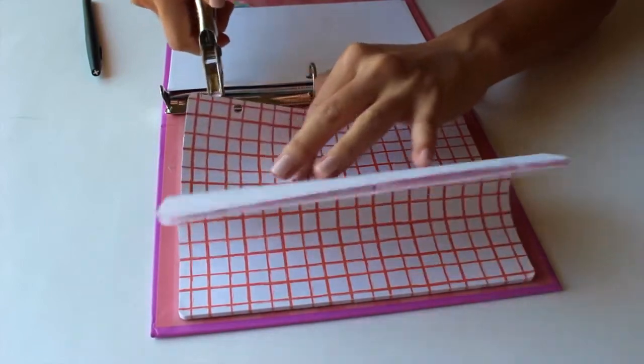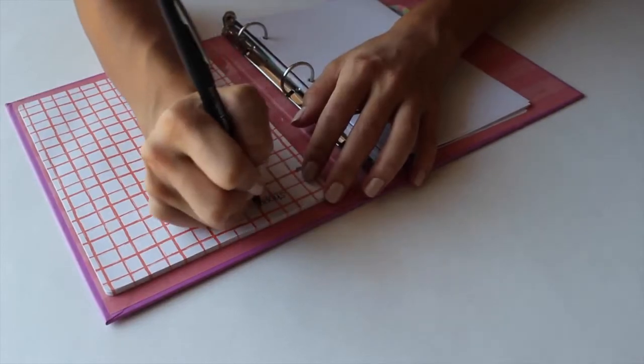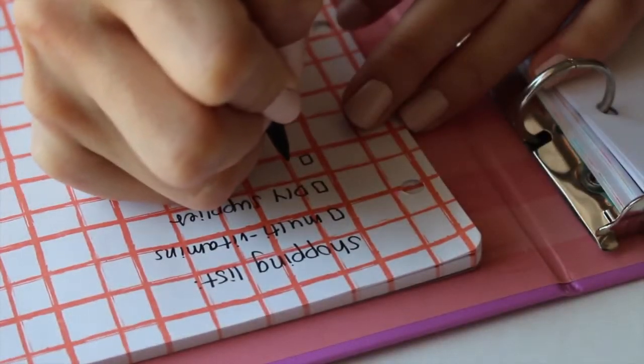Then I put three hole punches in it so that I could put the papers that I wrote on in the binder, in case I wanted to tear them out and put them in the binder for later storage.